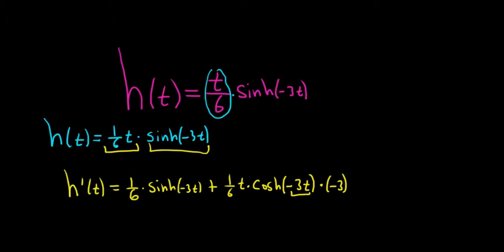Let's check that carefully. So the derivative of the first is 1/6, check, times the second, plus the first, so 1/6 t, times the derivative of sinh of negative 3t. The derivative of sinh is cosh. We left the inside untouched. Then we multiply by the derivative of the inside, which is negative 3. So the final answer is h prime of t,